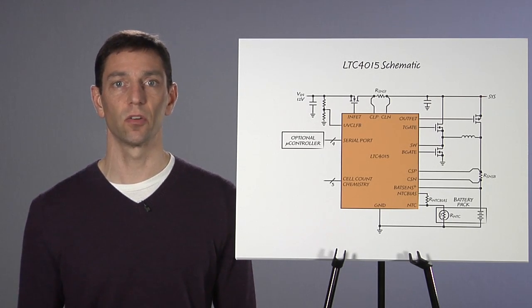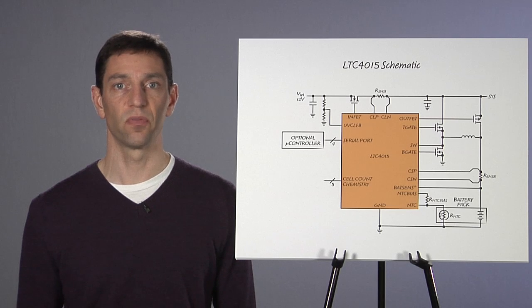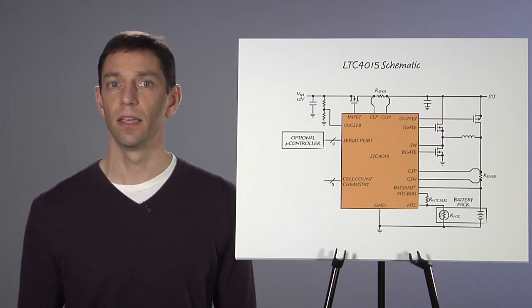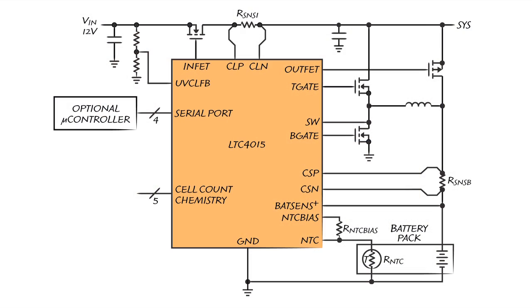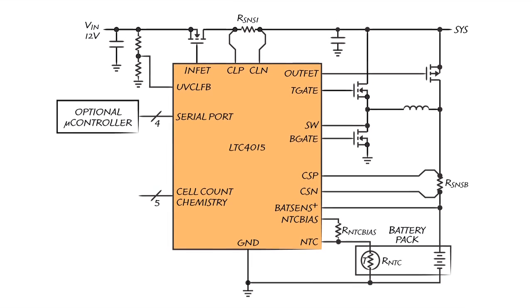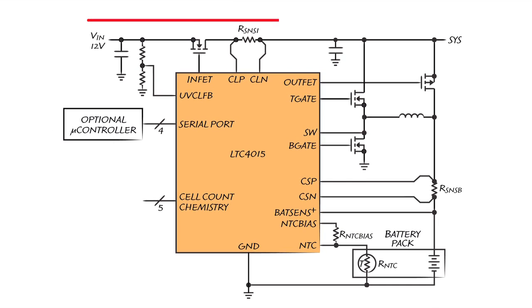To help ensure that current goes where it should, and to prevent it from going where it should not, the LTC4015 includes drivers for an input FET and an output or battery FET. These FETs function as an ideal diode ore between the input supply and the battery. This topology allows the application to draw power directly from the input supply when available, and to completely disconnect the battery from the system when fully charged or during a temperature fault.